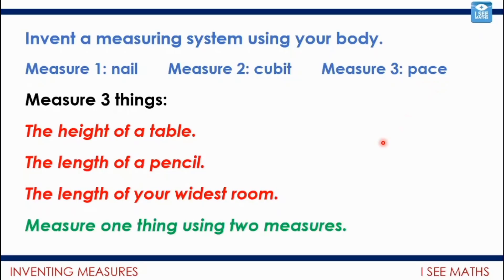To move on, I want to think about this. You're going to measure one of these three things that are in red using two of your measures. So which one will you choose? Just one of them and measure it in two of those measures. Which measures will you choose? Pause the video and do that. I wonder which things you chose. For me, I thought the length of a pencil, only really appropriate to measure that in my measurement system in nails. And I actually went for the length of my widest room, which I think I could measure in cubits and in paces. And I actually could work it out just by doing conversions as well. If I worked out how many cubits in a pace, then I actually wouldn't need to measure with my cubit again. I could just do a multiplication.